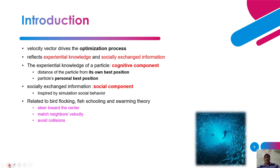The cognitive component is the distance of a particle from its own best position — the particle's personal best position comes under the cognitive component. The social component is inspired by the simulation of social behavior — related to bird flocking or fish schooling. The swarm theory focuses on: steer towards the center, match neighbors' velocity, and avoid collisions. These are the basic principles being used in PSO.